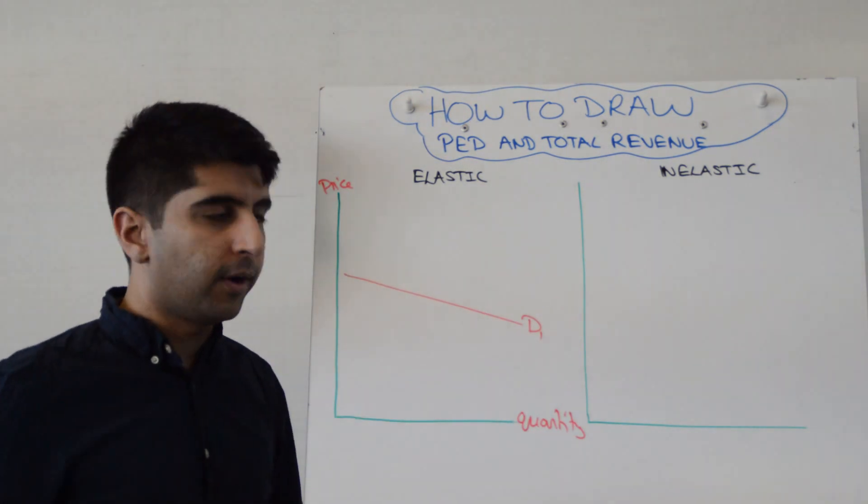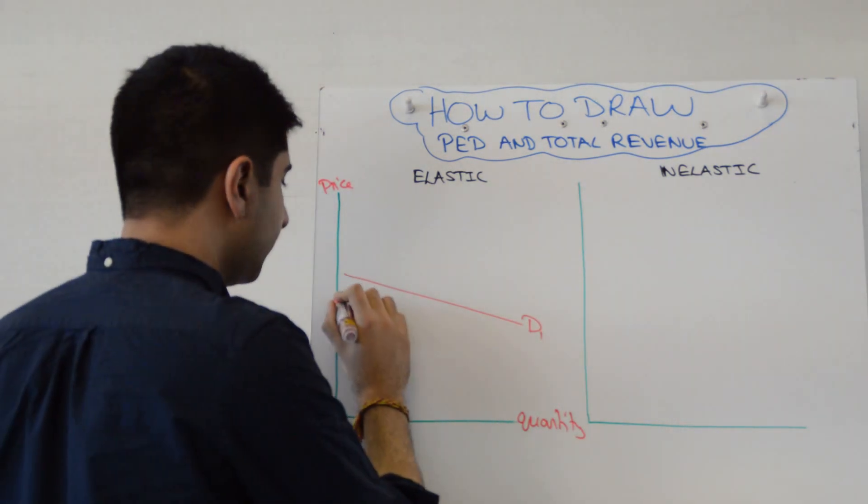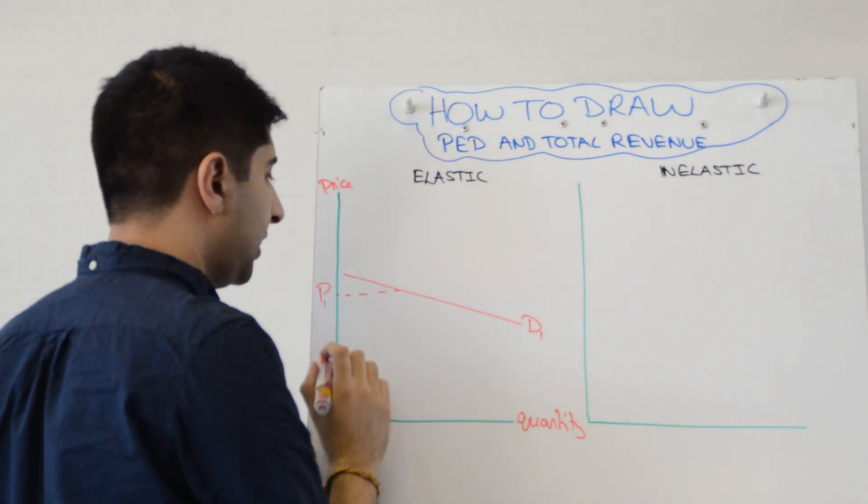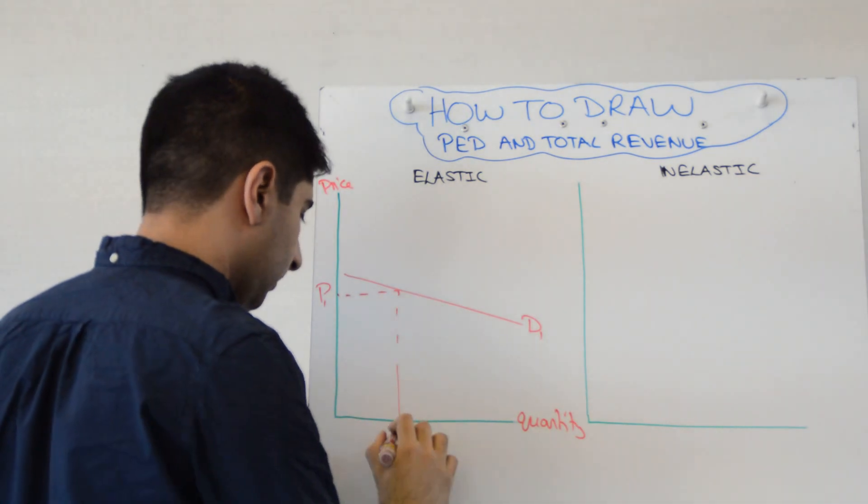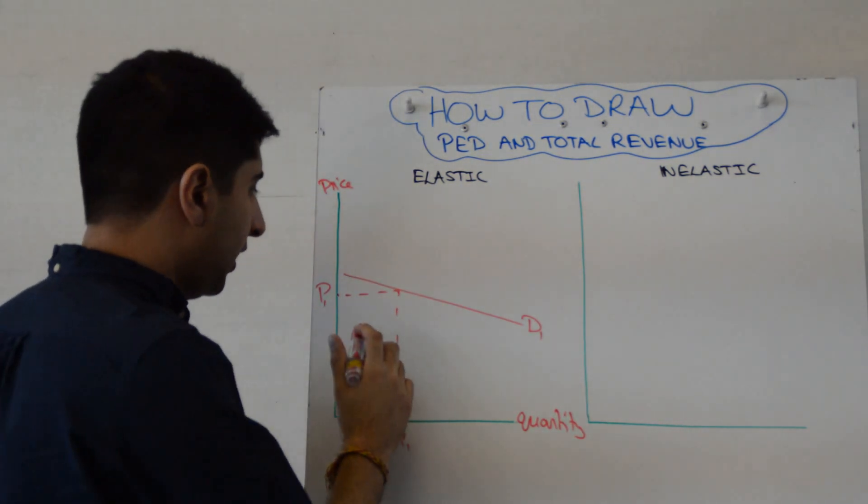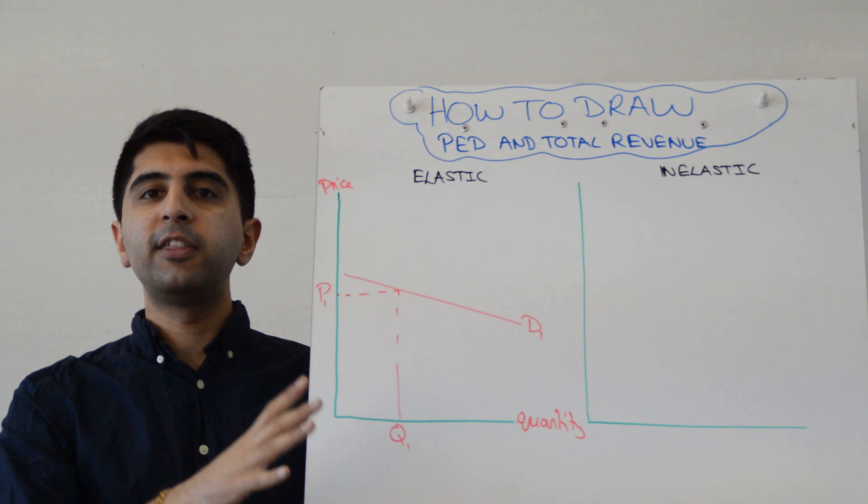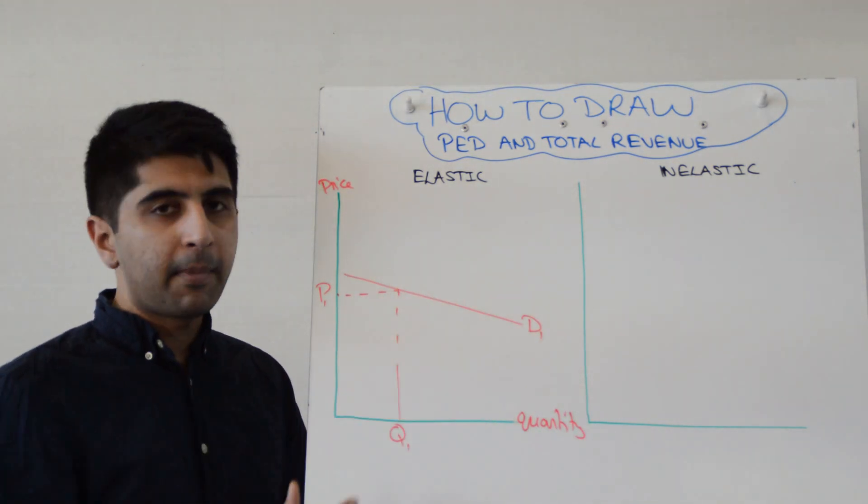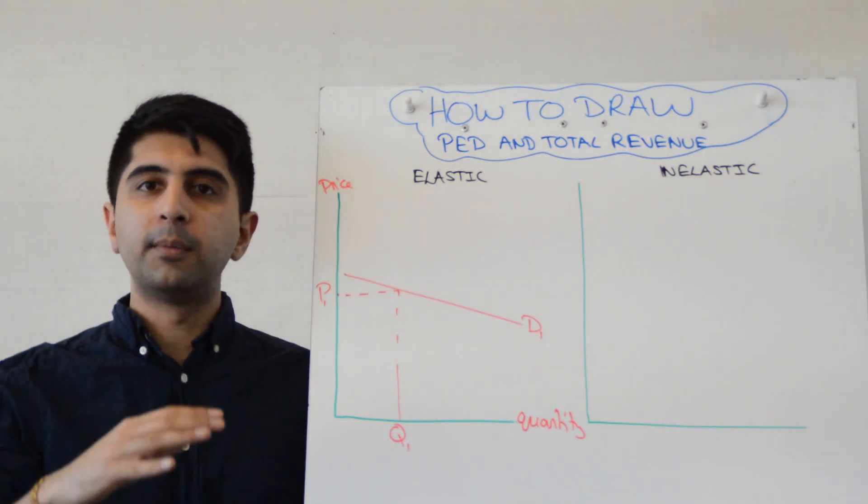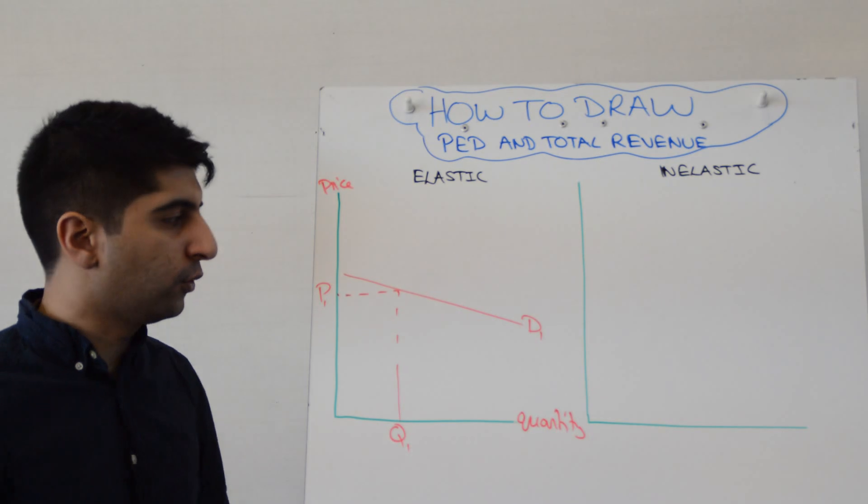Take an initial price, and call that price P1, and a quantity matching Q1, and now you should understand, and watch my theory video if you don't, that when demand for a product is price elastic, a firm should reduce the price to increase total revenue.